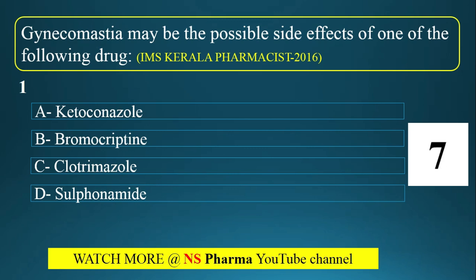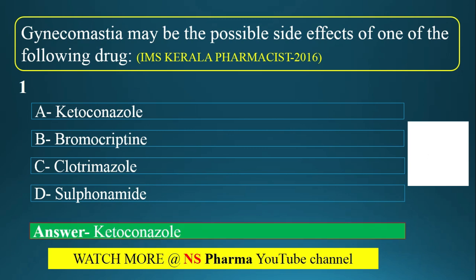You have 10 seconds to select your answer. The correct answer is ketoconazole — Option A is the correct answer. If you got the same answer, you will get one mark. Each question carries one mark. Once all questions are over, you can write your mark in the comment section.